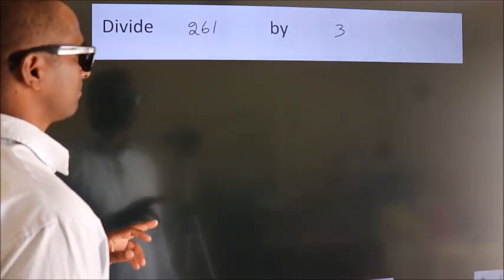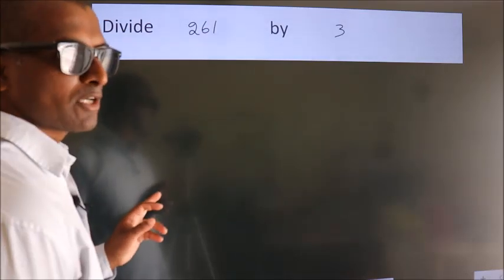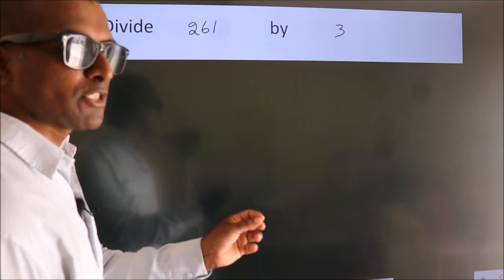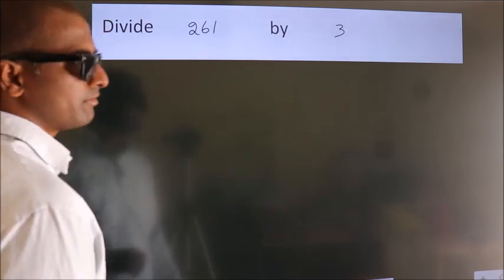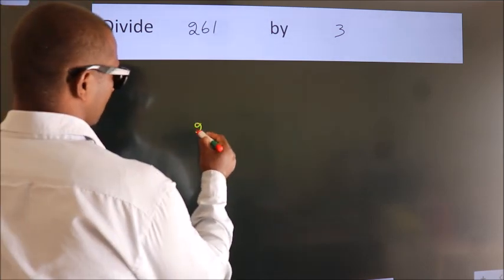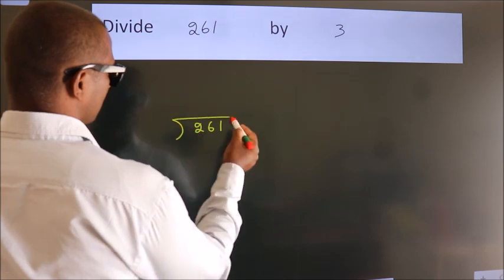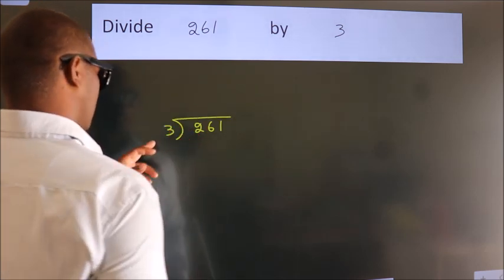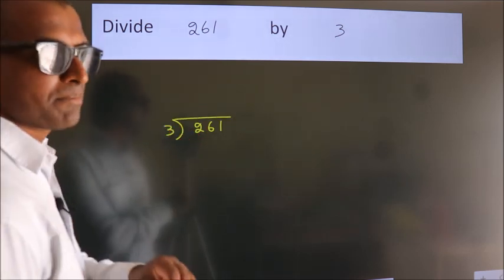Divide 261 by 3. To do this division, we should frame it in this way. 261 here, 3 here. This is your step 1.